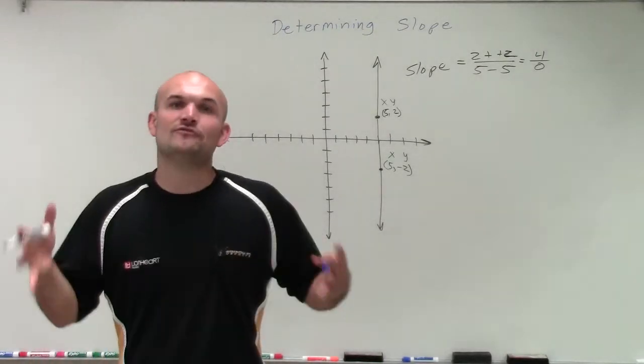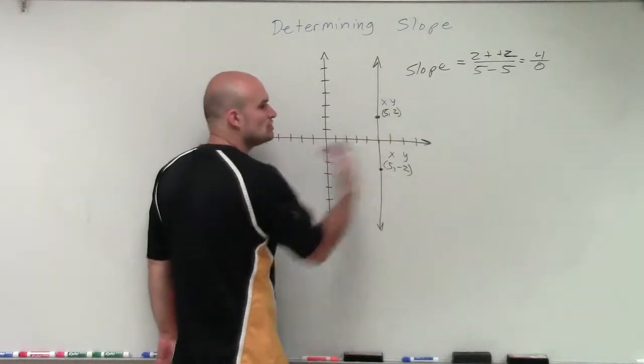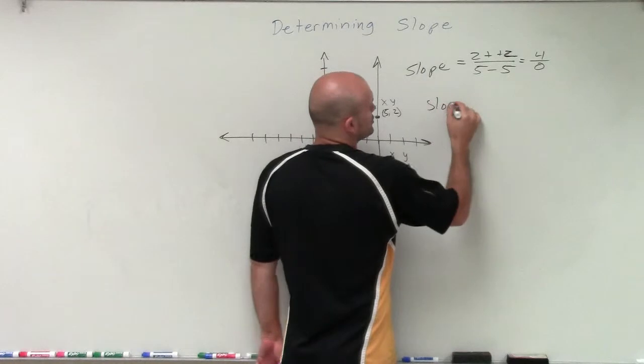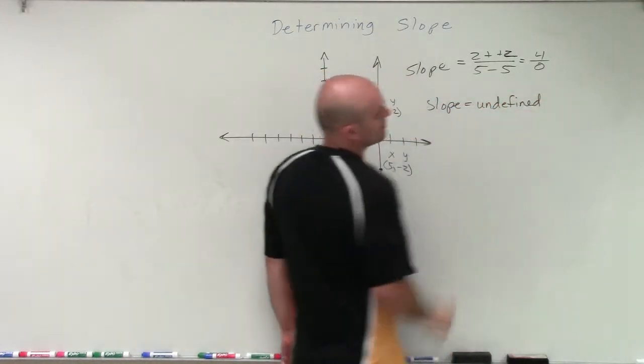And that's going to happen for every vertical line you have. When you have a vertical line and there's no change horizontally, your slope is going to be undefined. Thanks.